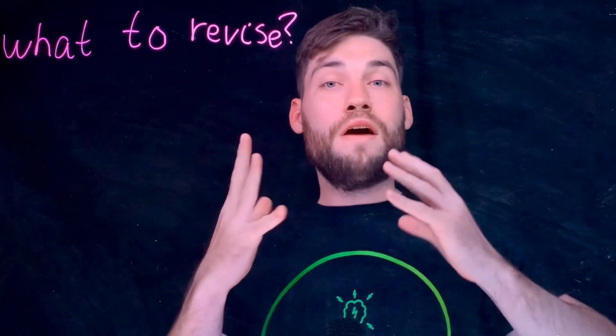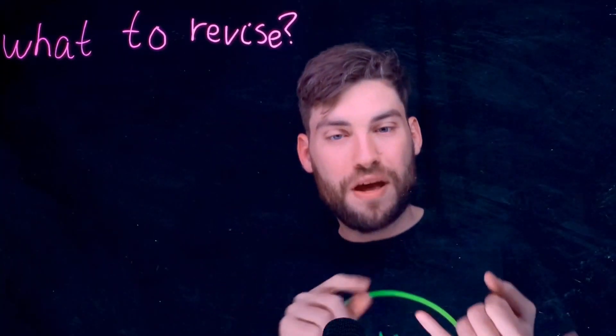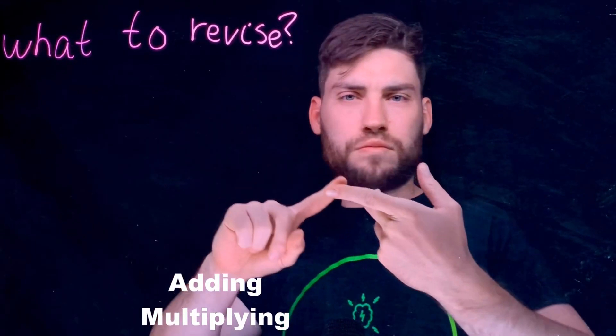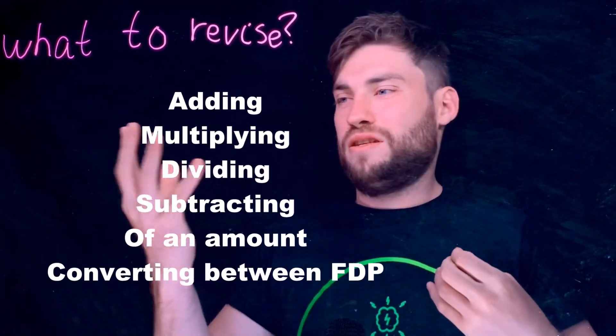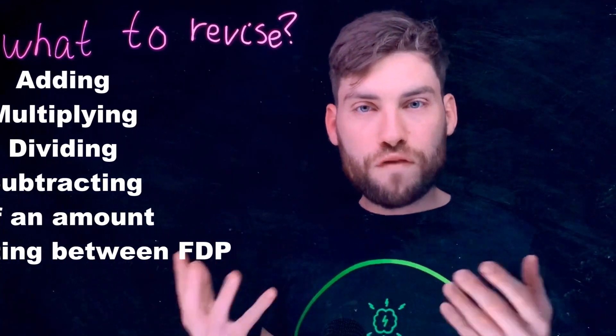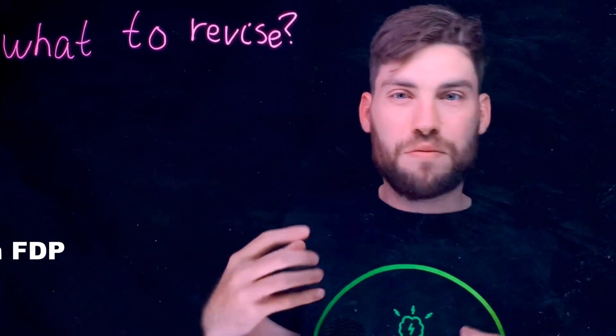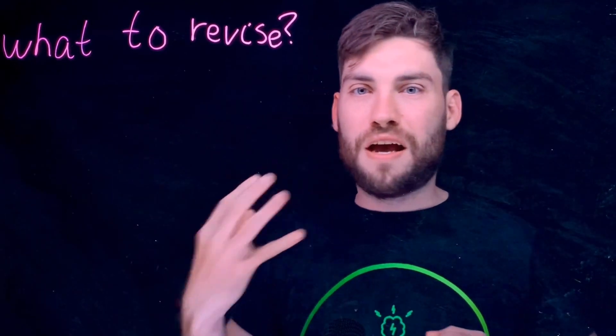The first section is fractions. You've got to know fractions if you want to pass maths. You need to know adding, multiplying, dividing, and subtracting fractions, fractions of an amount — so if it's two-thirds of 18, how you would do that — and also converting between fractions, decimals, and percentages. That is the first section.